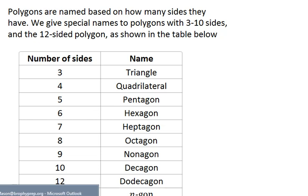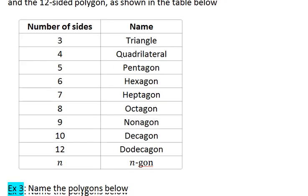For naming polygons, polygons are named based on how many sides they have. We give special names to polygons with 3 to 10 sides and the 12-sided polygon, as shown in the table below.